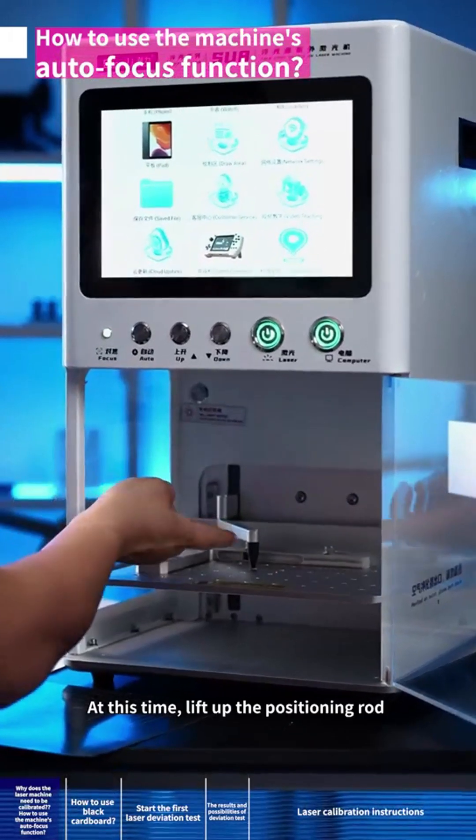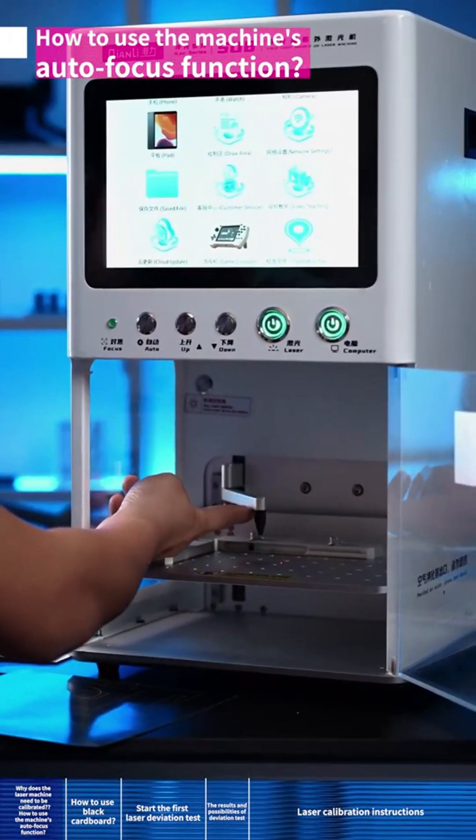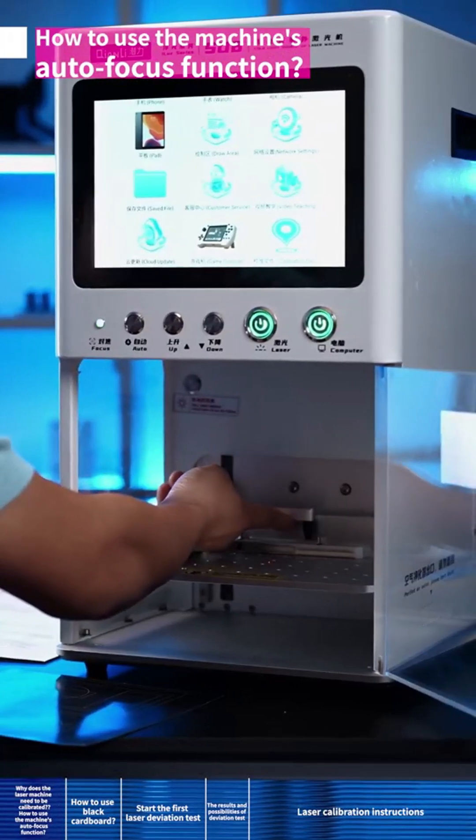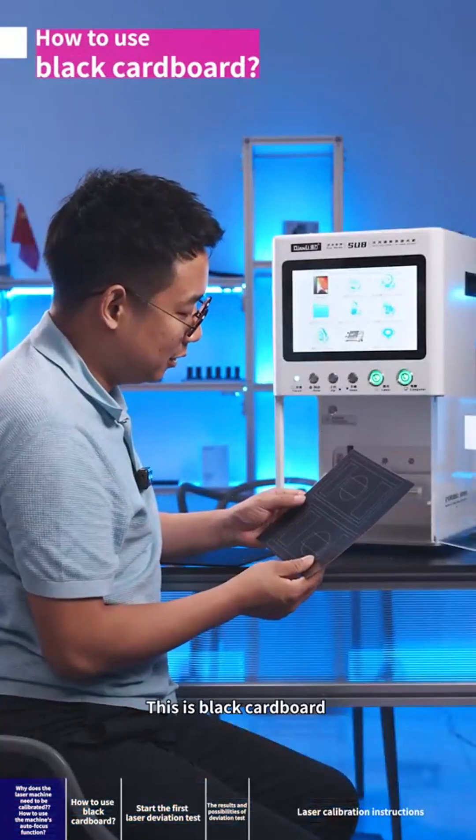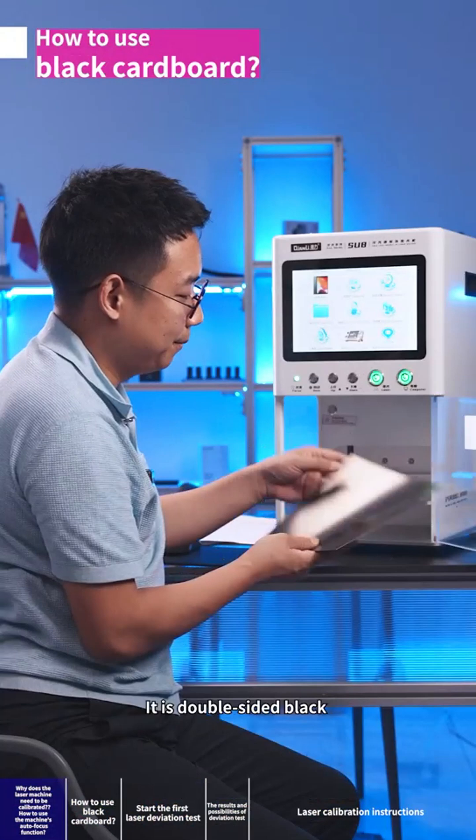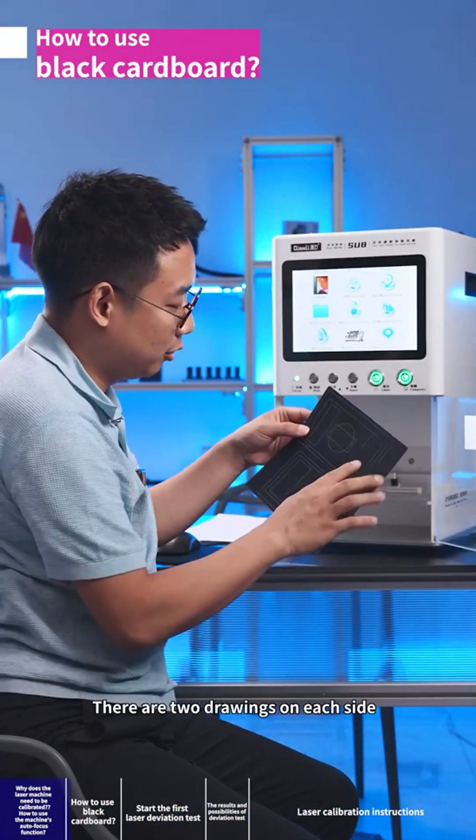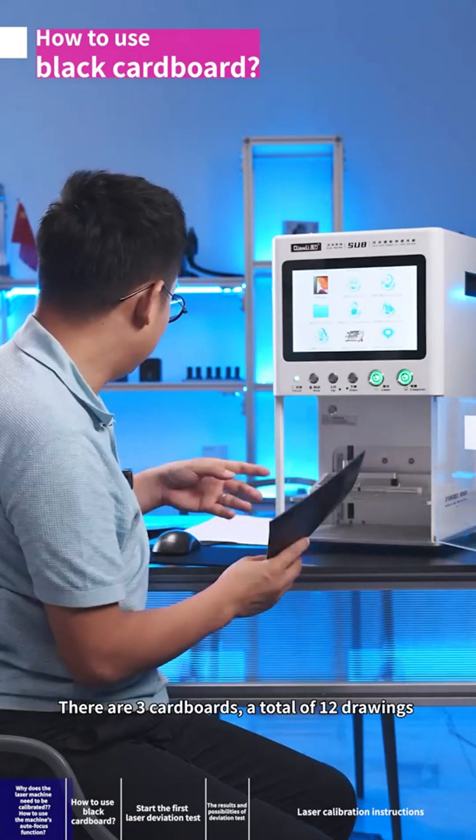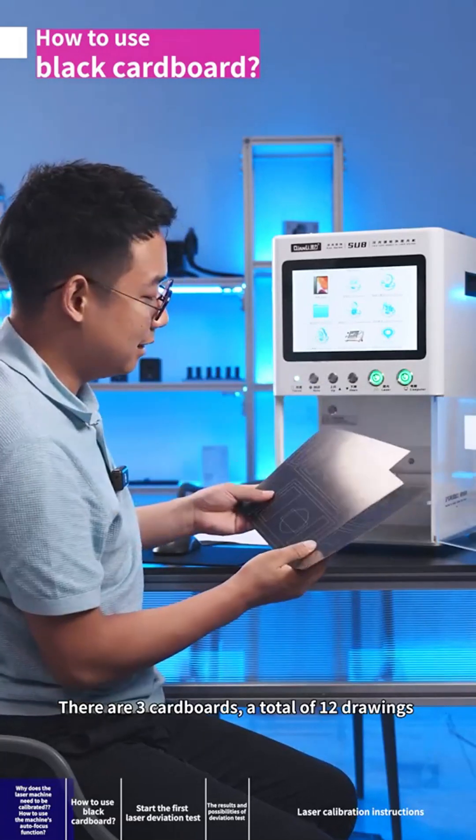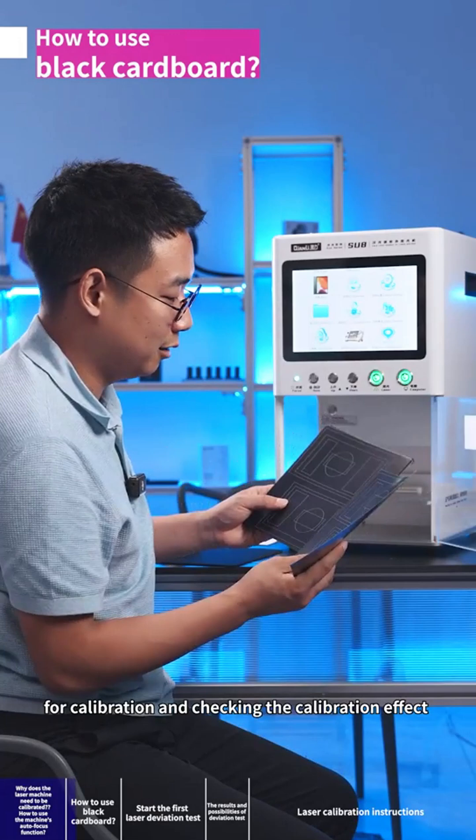This means the focus is complete. At this time, lift up the positioning rod and push it back. This is black cardboard - it's double-sided black. There are two drawings on each side, three cardboards total, with 12 drawings for calibration and checking the calibration effect.